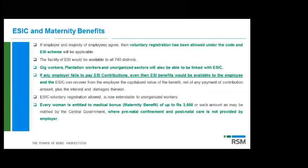For ESIC, the facility will now be available across all 740 districts, so the concept of covered and non-covered areas will likely go away over time. Gig workers, platform workers and unorganized sectors will also be linked with ESIC. One significant change is that if the employer fails to pay the ESIC contribution, the employee will continue to get the benefits — the corporation will recover the amount from the employer along with interest and penalty. The employee will not be penalized for any default of the employer.